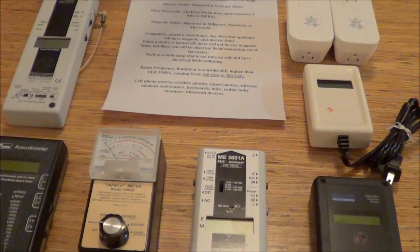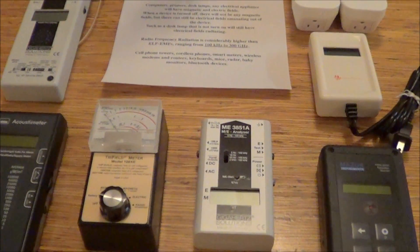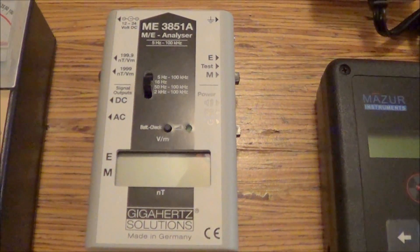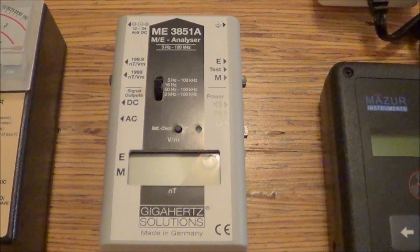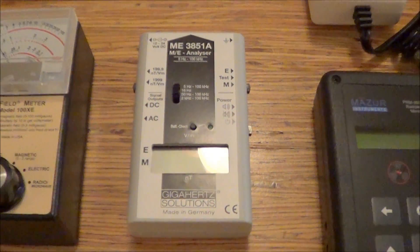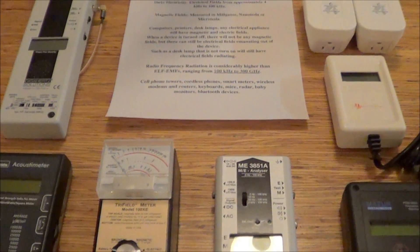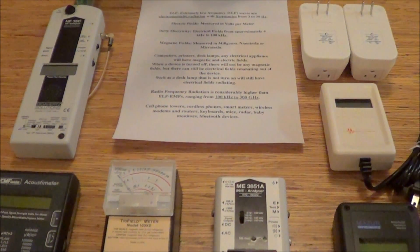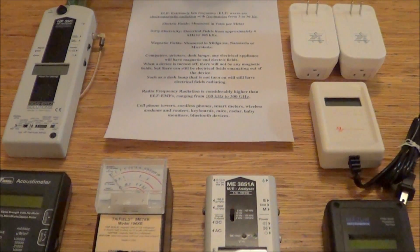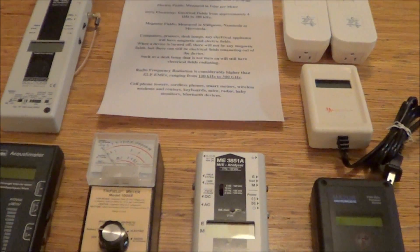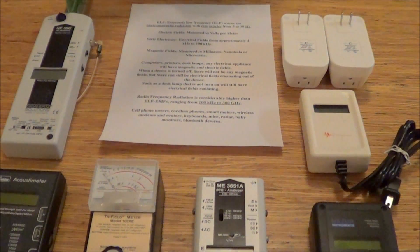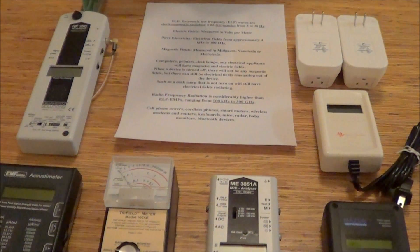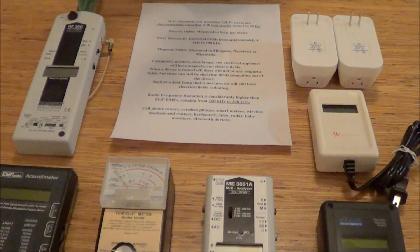Now, electric fields are measured in volts per meter, and the gigahertz solutions meters will measure the electric fields in volts per meter. Electric fields will come off of any appliance, any electrical appliance. It will come off of your desk lamp, off your lamp on your nightstand. It comes off the refrigerator. Any electrical appliance will have electric fields, magnetic fields, and they will have magnetic fields.